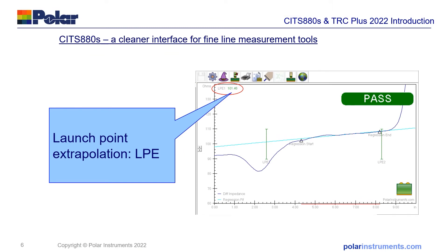But when you do have fine traces, the trace does rise up. Here's a screenshot from the latest version of SITS 880S where we're using a technique called launch point extrapolation. We've cleaned up the display to remove the typical test windows, simply to show the launch point extrapolation measurement, which is actually projecting the slope of the line backwards to the launch point of the trace so we can get a good measurement of the characteristic impedance minus the DC resistance in the trace.